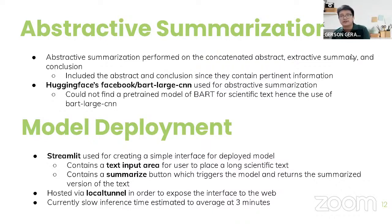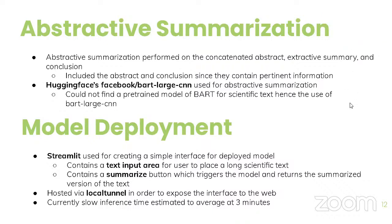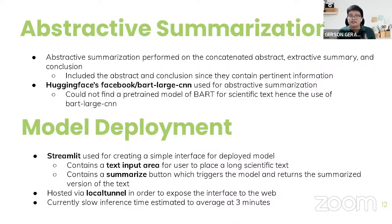Now that we have the extracted summary, it's time to perform abstractive summarization. Abstractive summarization was performed on the concatenated abstract, extractive summary, and conclusion. In scientific papers, the most concise information is contained in the abstract and conclusion, so it's very important to include them. My reference paper used a similar method, validating this approach. Instead of just abstracting the extracted summary, I first concatenated all three before performing abstractive summarization.